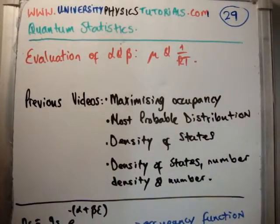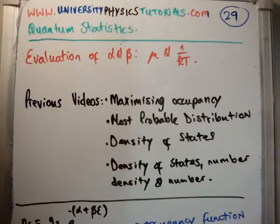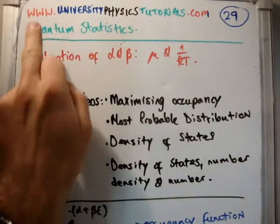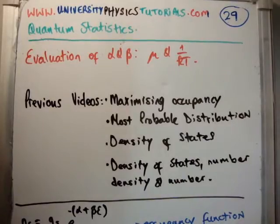In this video I'm going to continue on with my tutorials on quantum statistics. This is video number 29 and I'm going to discuss the evaluation of alpha and beta. I'd also like to introduce you to my website universityofphysicstutorials.com. The previous videos to this are maximizing occupancy, the most probable distribution, density of states, number density and occupancy. So a quick bit of revision.